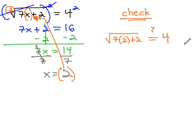Going back to the very original problem before we did anything to it. Well, 7 times 2 is 14, so we get the square root of 14 plus 2. Hopefully, that equals 4.